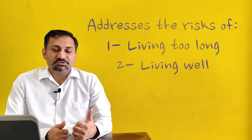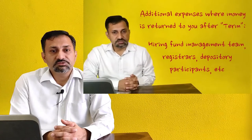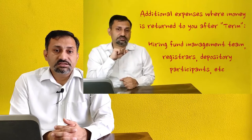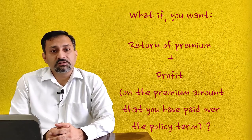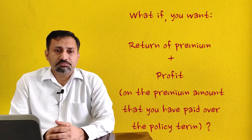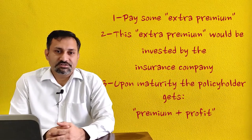These can be used to address two kinds of risks: number one, the risk of living too long, and number two, the risk of living well. As we have already discussed in the last episode, in a TROP — meaning term with return of premium — kind of plan, there are charges like administrative charges, marketing expenses, mortality charges, etc. Besides, a portion of the premium is invested and the profits thereof are used to repay the premium collected from the policyholders over the policy term. So similarly, if we want that at the time of maturity, in case a policyholder survives the policy term, he or she should not just be returned the premium paid.